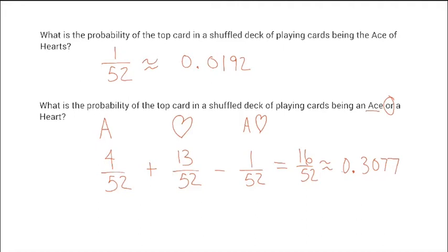16 divided by 52 gives approximately 0.3077. We do not use percentages for these answers because probabilities must be between zero and one. Keep representing these as decimals. If you convert to a percentage and type that into the homework system or on a test, it will be marked wrong. Make sure you give your answers as decimals.